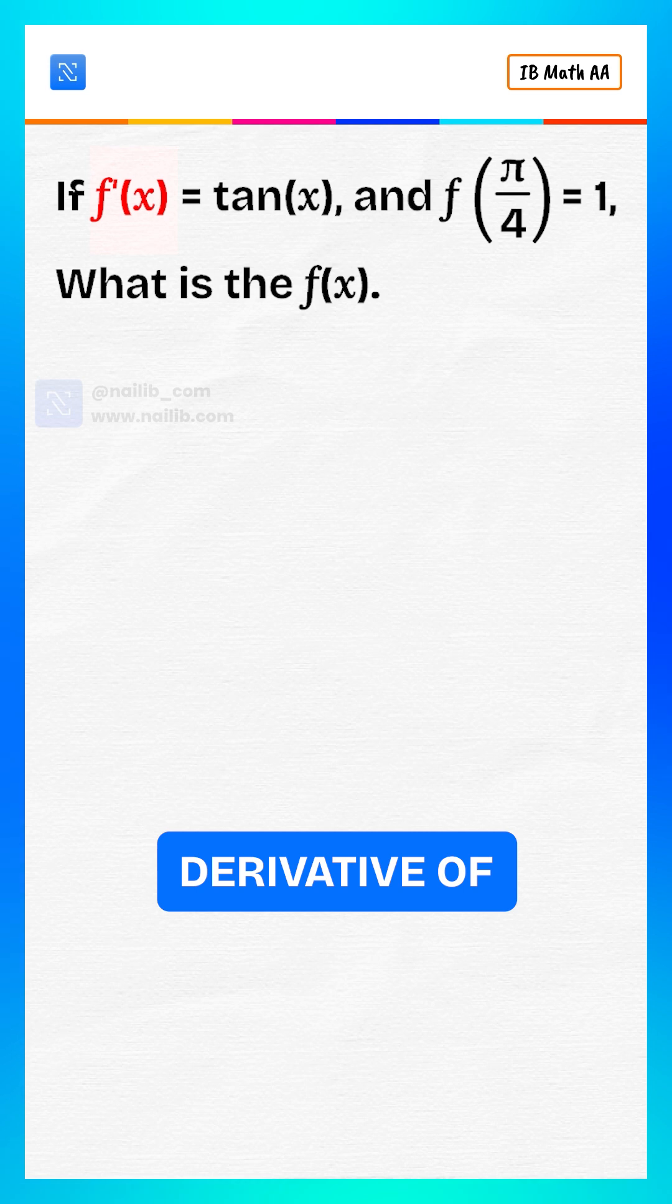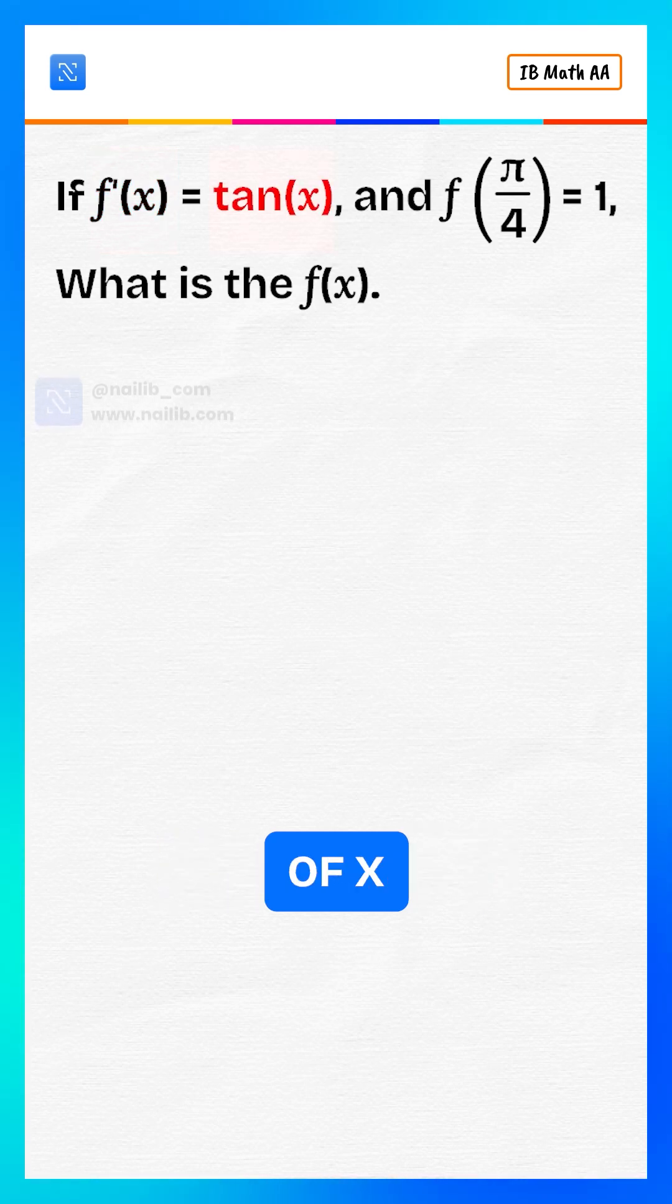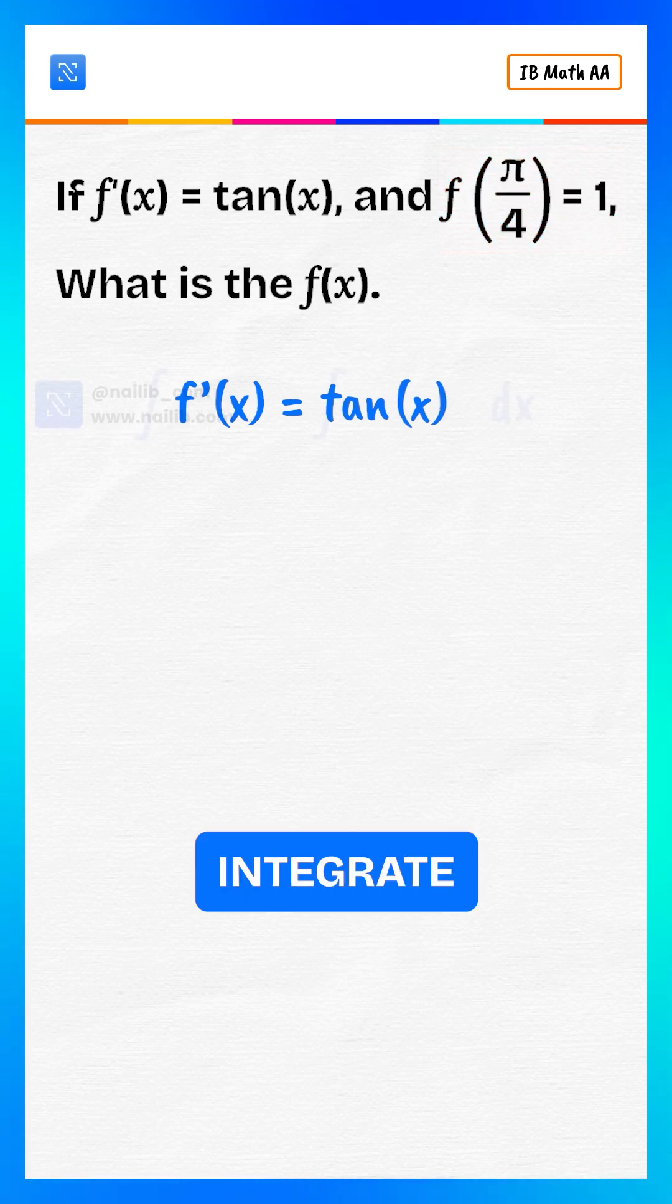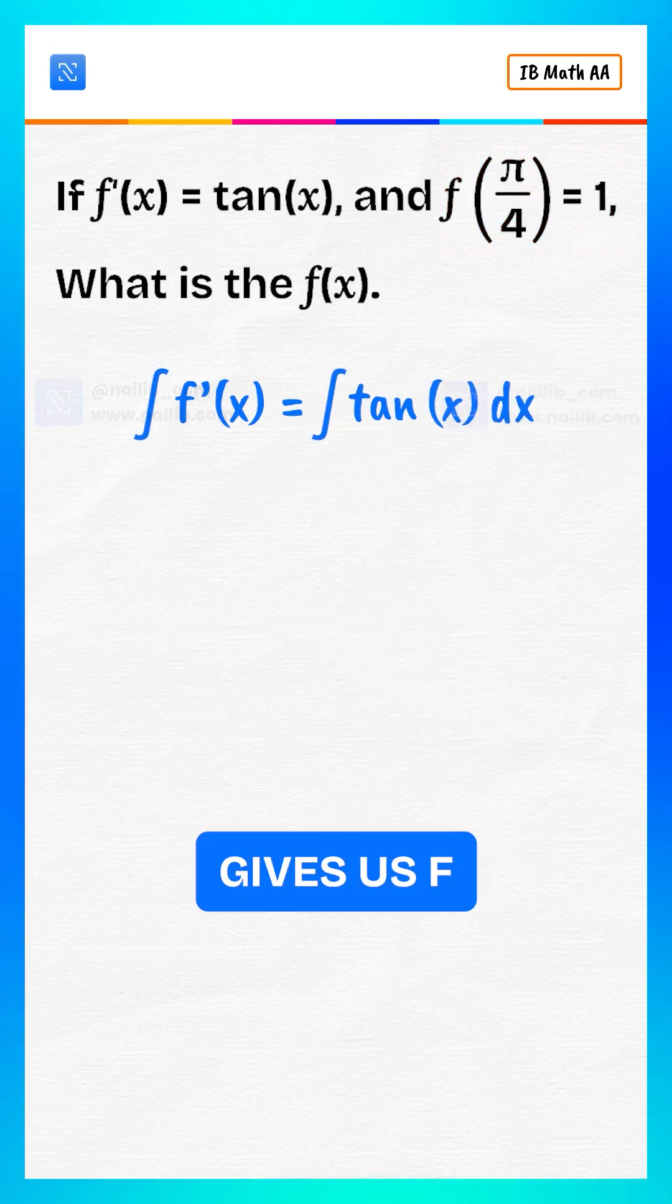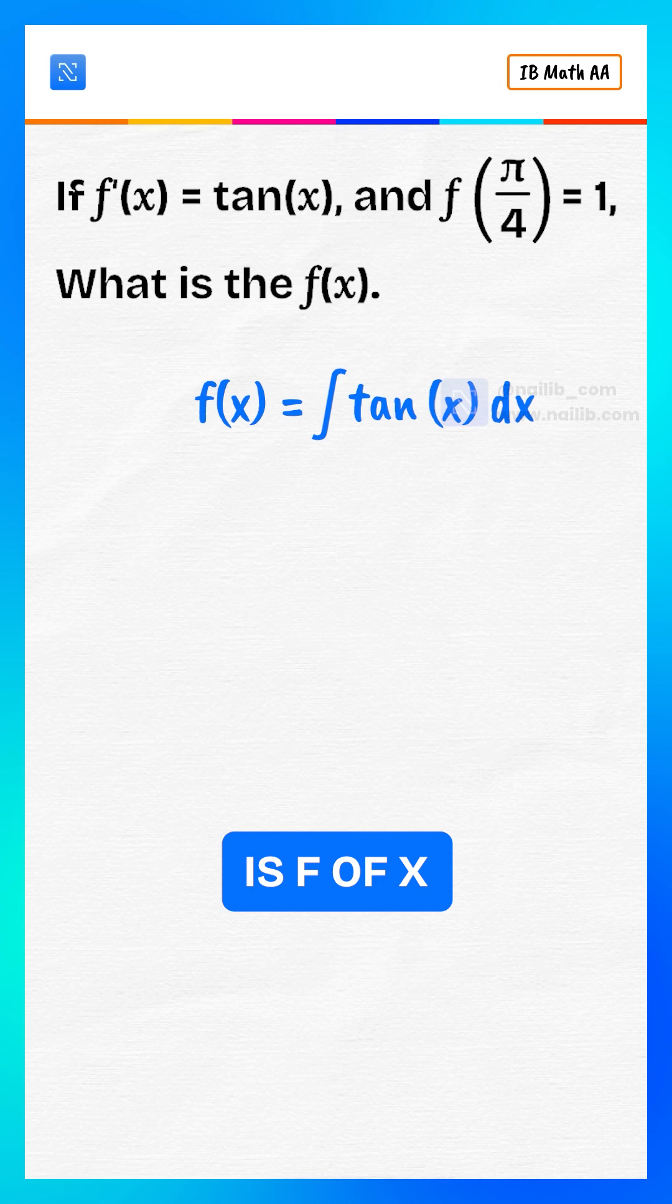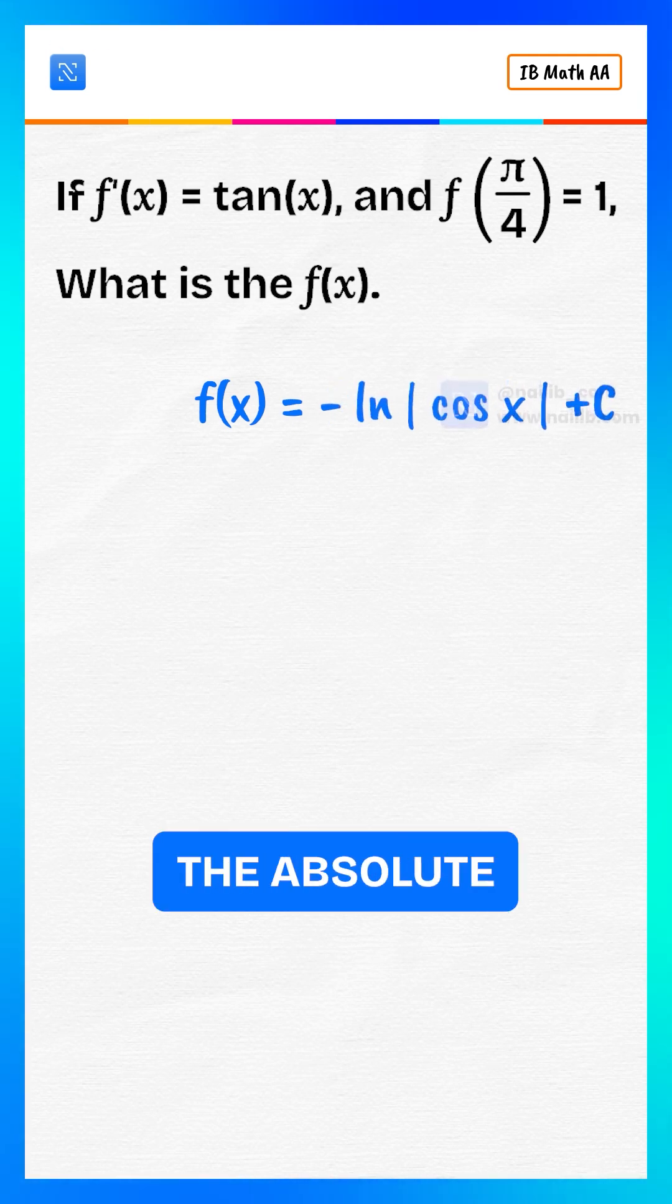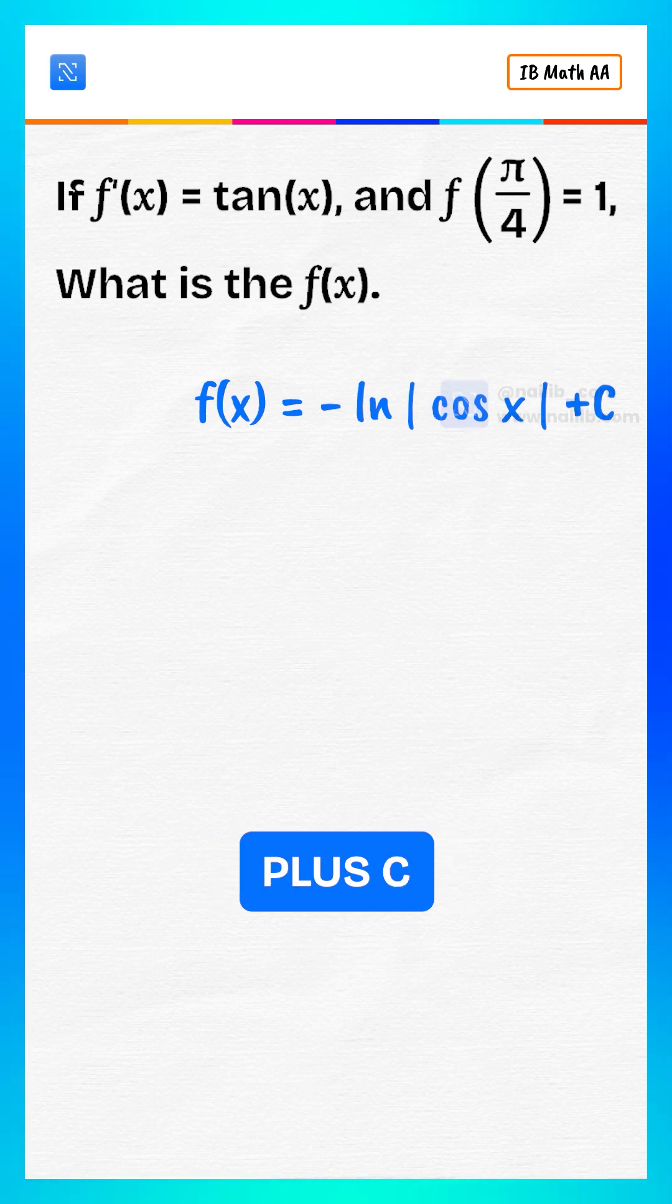We're given that the derivative of a function f is tangent of x and that f of pi over 4 equals 1. Integrating both sides, the integral of tangent x is negative log of the absolute value of cos x plus c.